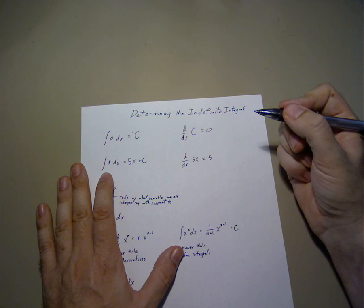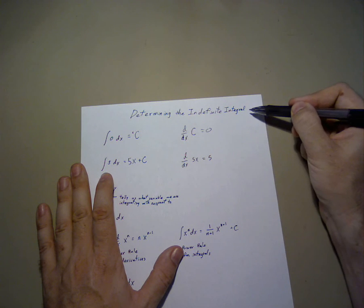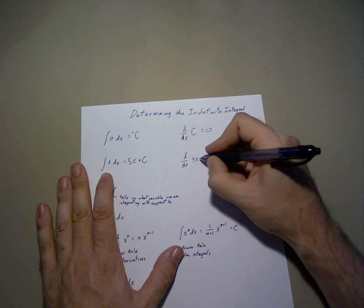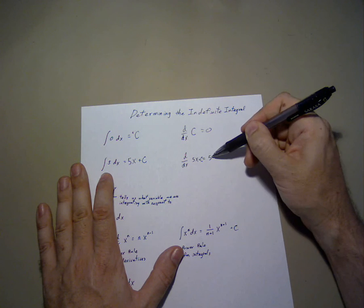Sometimes that c is important, sometimes it is not, but we always need to add it to an indefinite integral. Where c is simply a generic constant. We can turn around and take the derivative of 5x plus c and see that we always get 5.